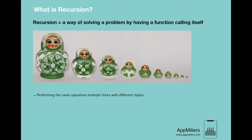The second property of recursion is that in every step we try smaller inputs to make the problem smaller. Similarly, in the case of opening Russian dolls, we try to make the problem smaller — first we open the big doll, then the next smaller one, and then the next smaller one, and so on. Every time we make the problem smaller, this makes it easier to find the solution at the end, which is the smallest Russian doll that does not contain any other one.